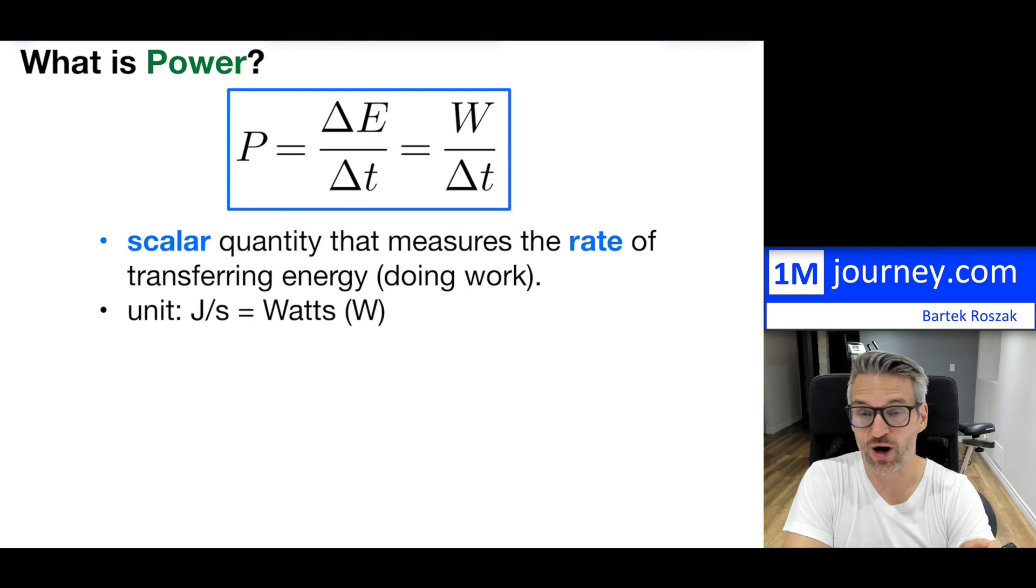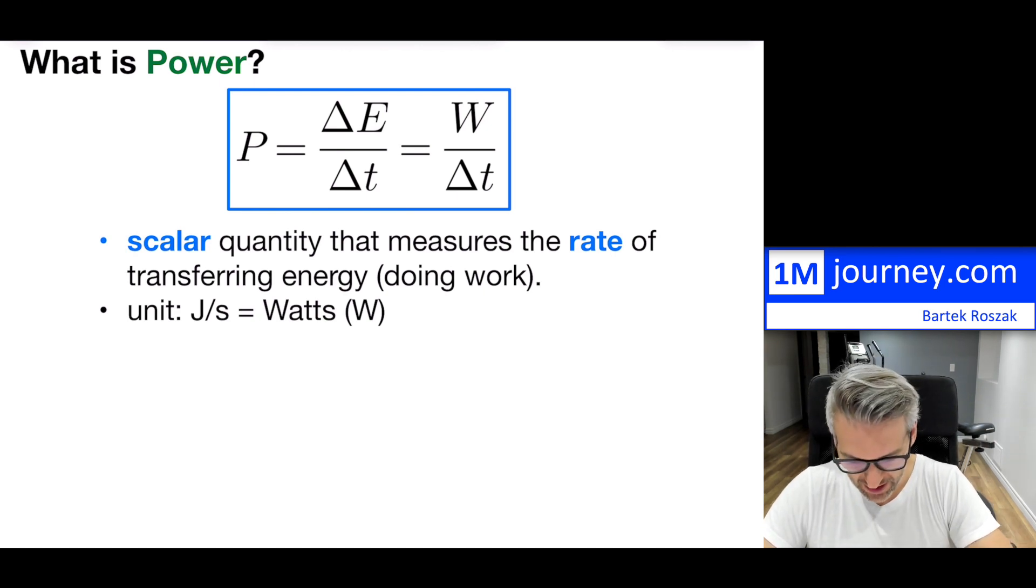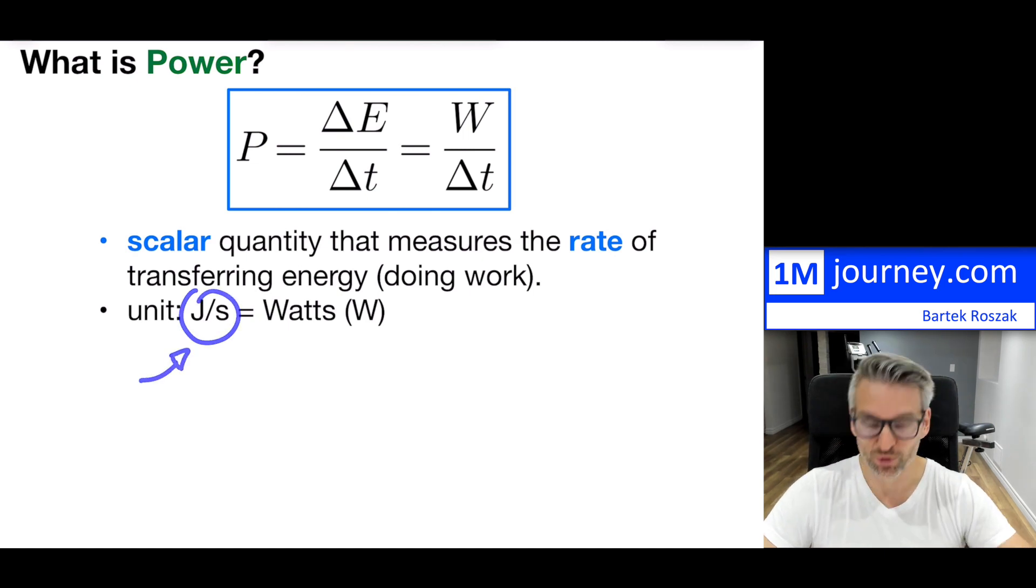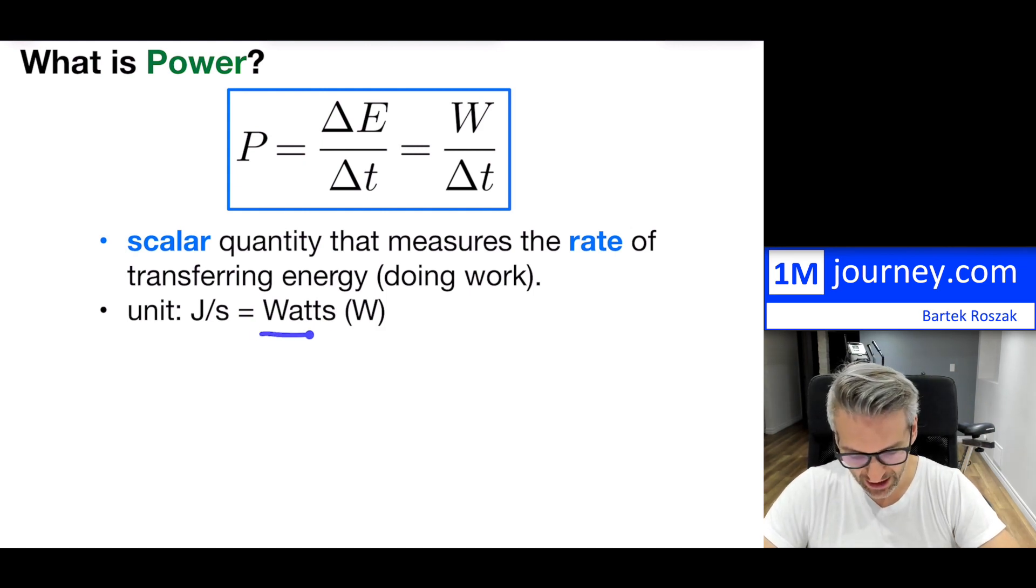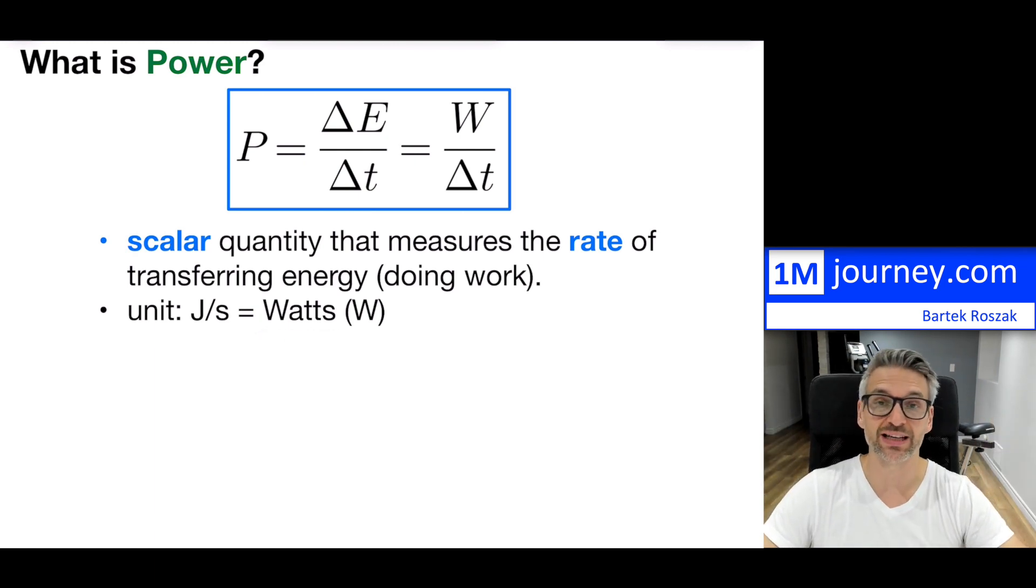So how quickly can you do a certain task? The doing of task is measured by the amount of work that someone does, and the amount of work is the actual transfer of energy, the change of energy. That is why we're writing a delta. So delta E just means the change in energy divided by the change in time, P = ΔE/Δt = W/Δt.